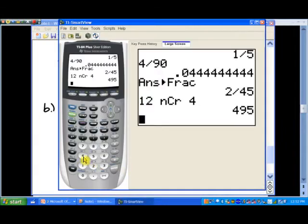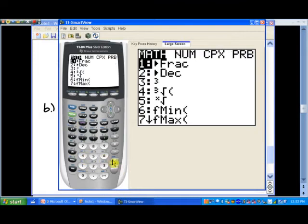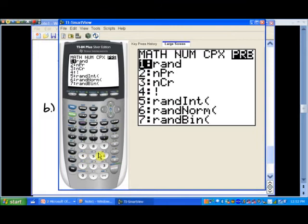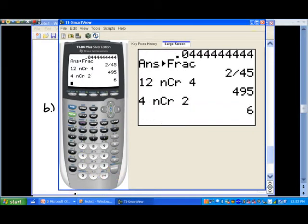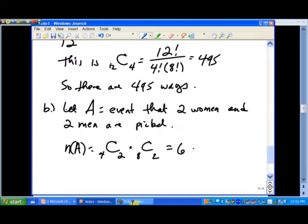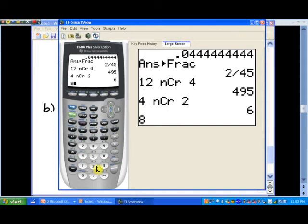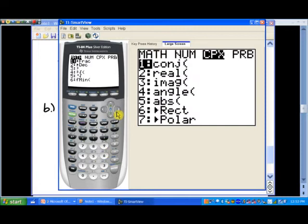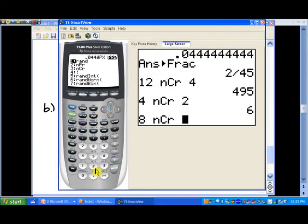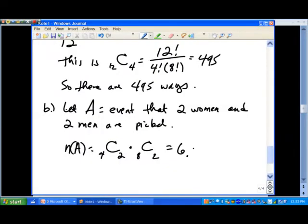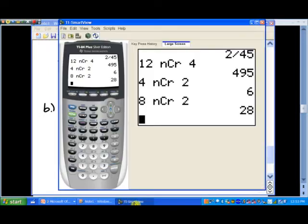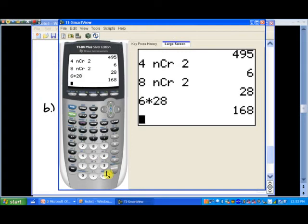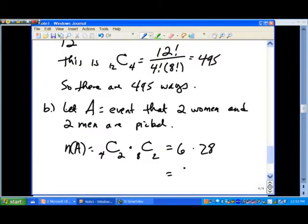All right. Let's find those individually just to see what we get here. So in our calculator, if we hit four, math key, go over to probability, combination two, that number is six. So let's write that down. And then we want the combination eight choose two. So that's eight, math, probability, and then combination two. So it looks like we get 28 for that.